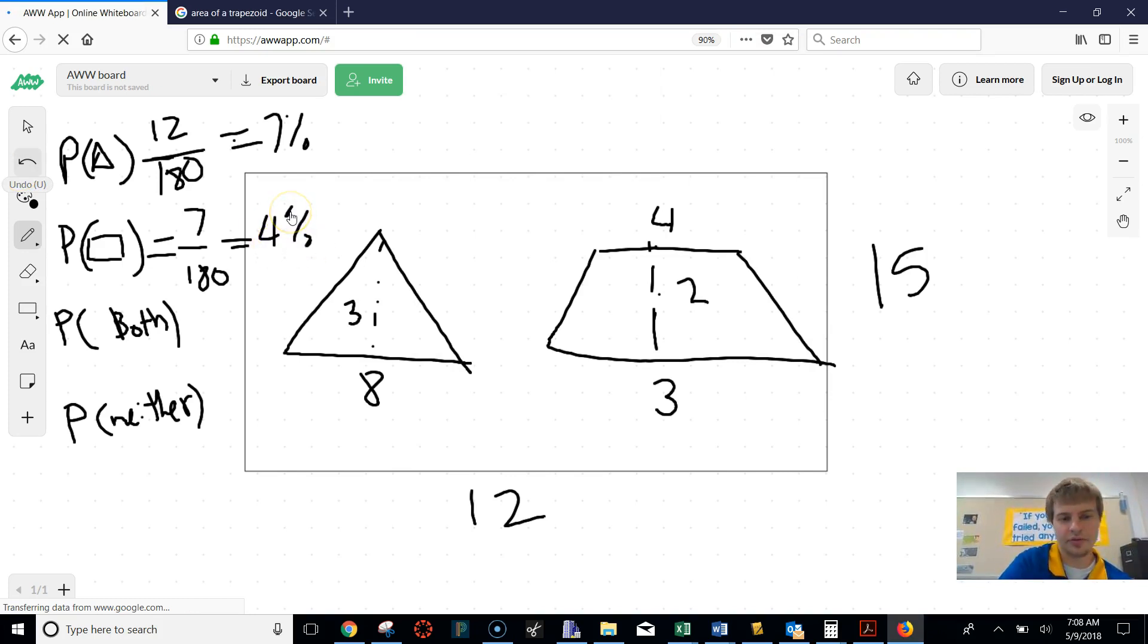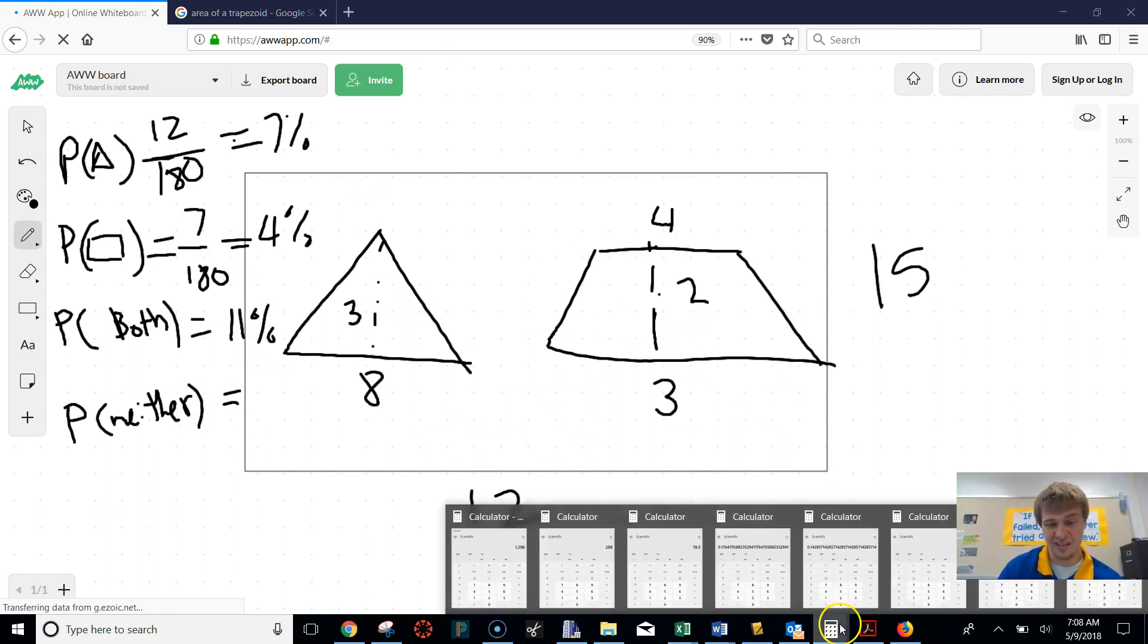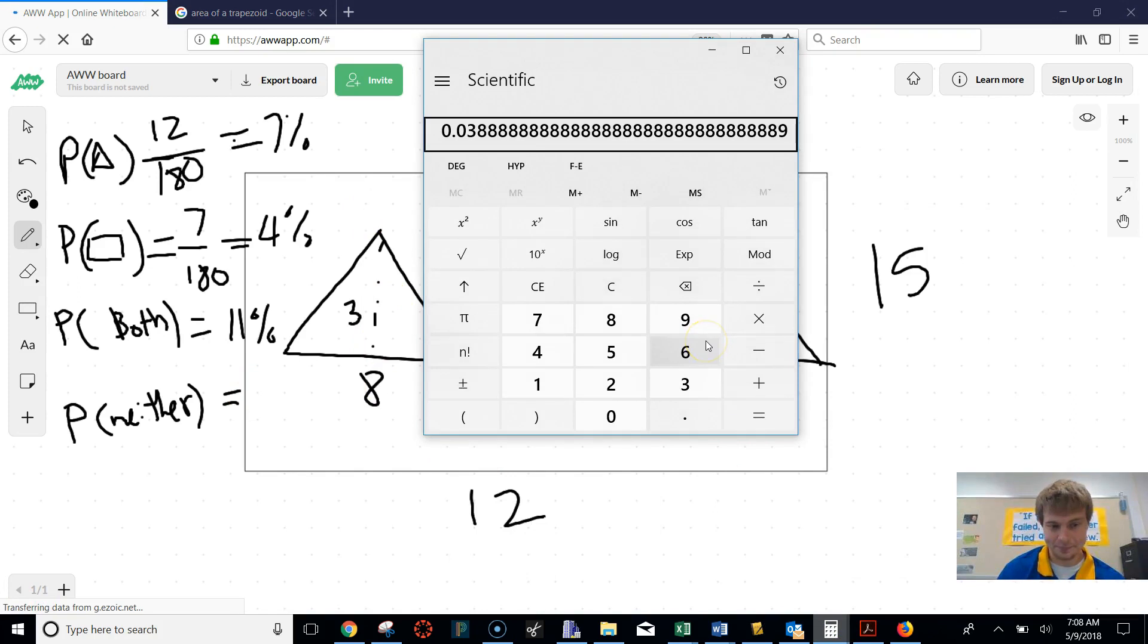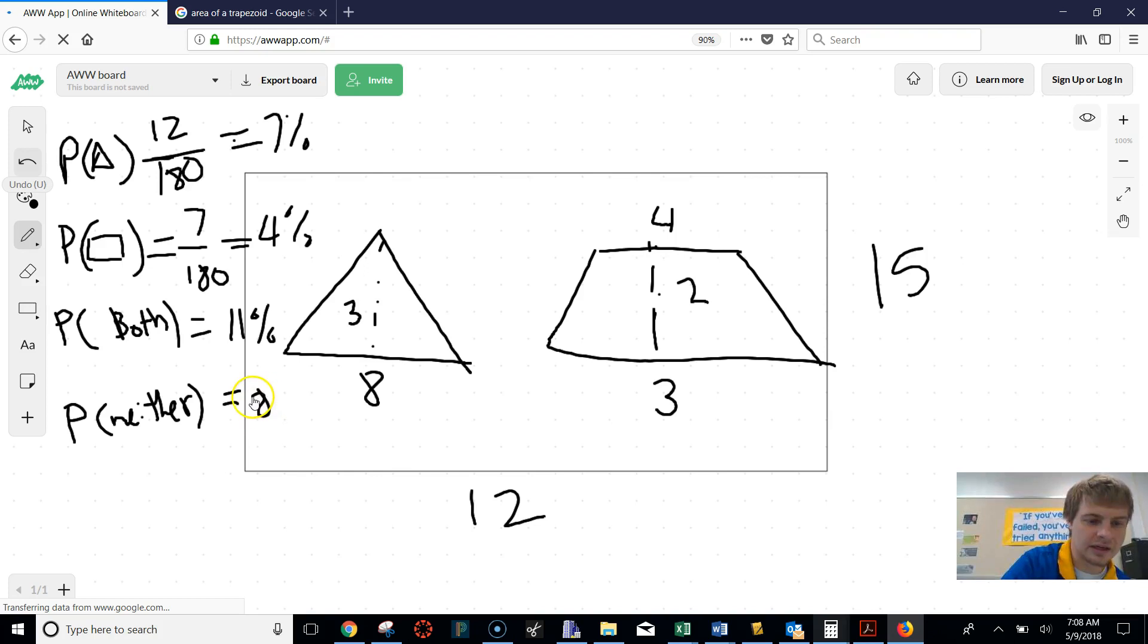So that's 7% and that's 4%. Both would be 11%. And then neither. Well, all this should be 100%. So if we want neither, that would be, we start out with 100% and we've used 11 on both of the shapes. So that remaining area should be 89%. So again, when we're finding all of these probabilities, all you have to do is find the area and put it over the total.